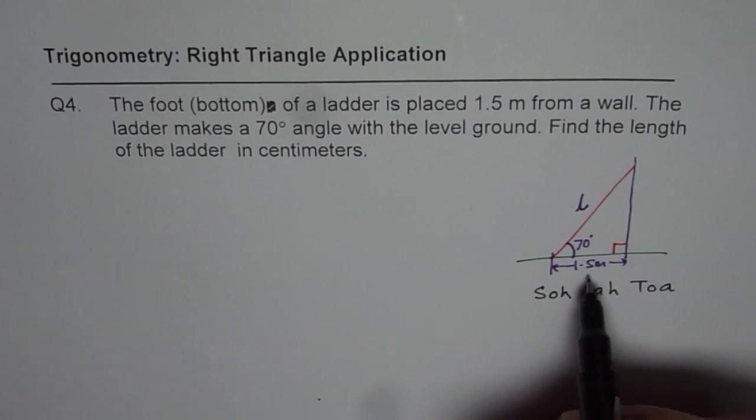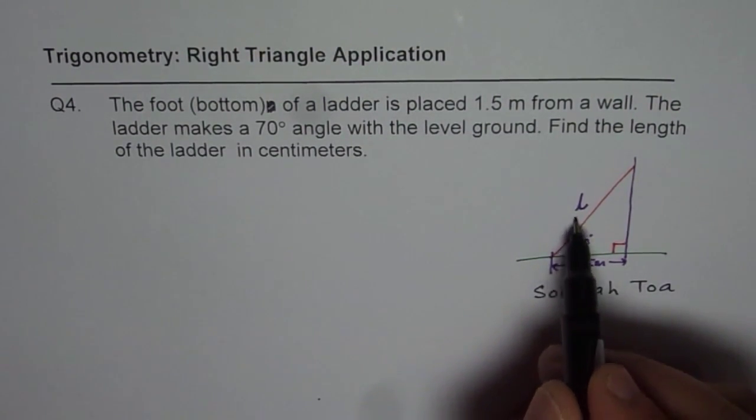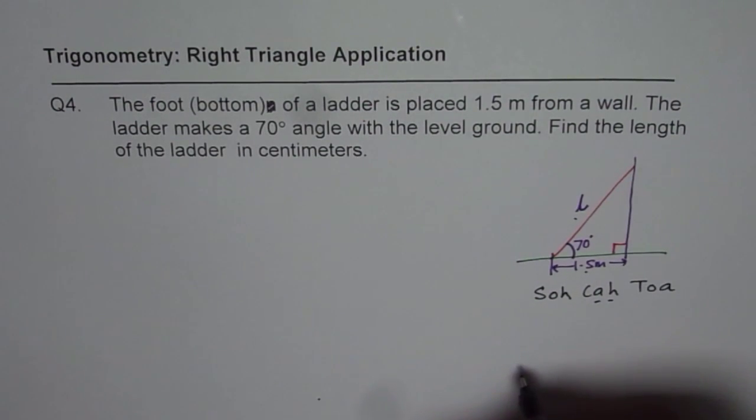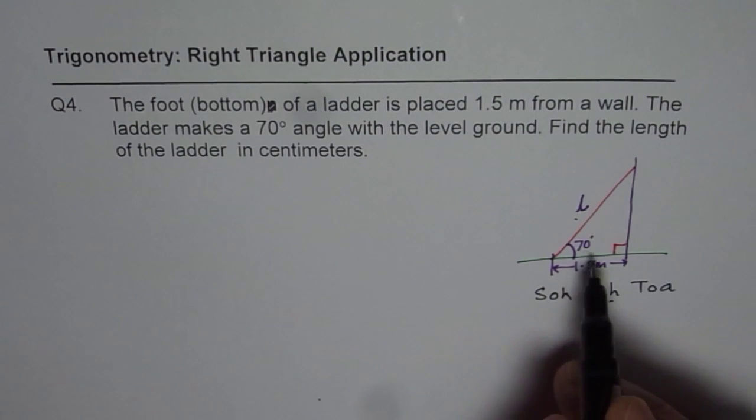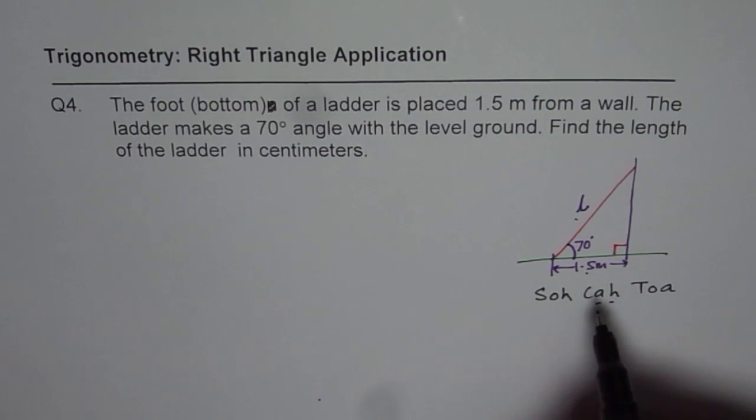What are you given? You are given adjacent side and hypotenuse. Adjacent and hypotenuse. Therefore you should use cosine to solve this question. So that is our first step, what or which trigonometric ratio should we use?